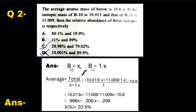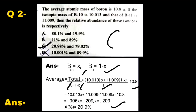The equation is: 10.013 × x + 11.009 × (1 − x) = 10.8. After solving, x equals 0.209, which gives 20.9% for B-10. Subtracting from 100%, B-11 is 79.02%. This matches option C, which is the correct answer.